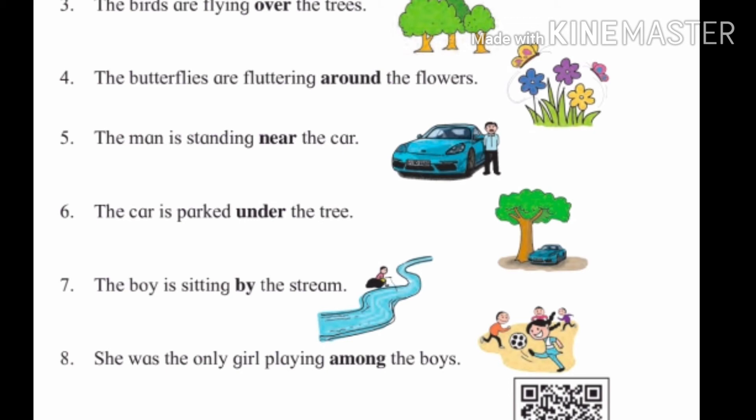The man is standing near the car. Ek manos toh karcha zhawal uba ahe. You can see in the picture how the man is standing near the car — at that position we use the word 'near.' Man means manos, stand means uberane, near means zhawal.